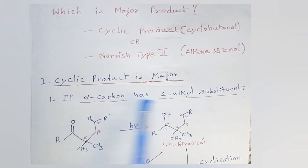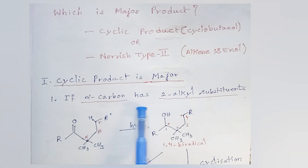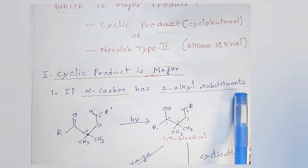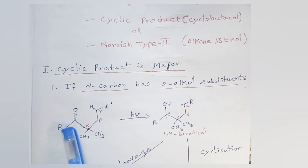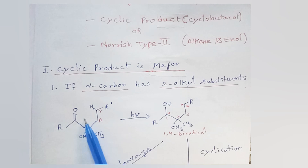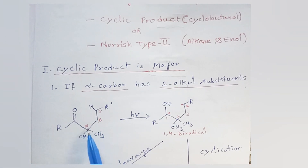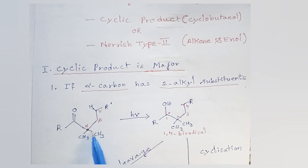Cyclic product is major if the alpha carbon has two alkyl substituents. In this carbonyl compound, this is the alpha carbon, this is the beta carbon, and this is the gamma carbon with the gamma hydrogen. The alpha carbon has two alkyl radicals here, that is two CH3 groups.